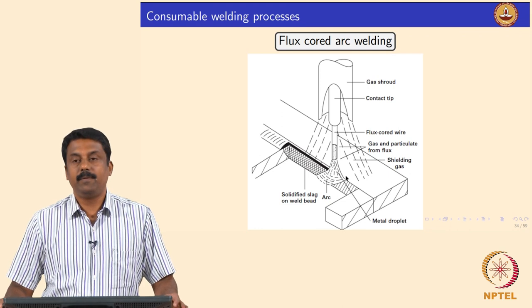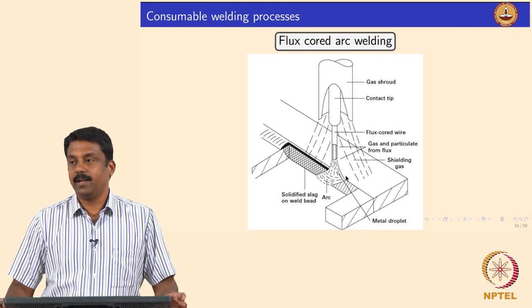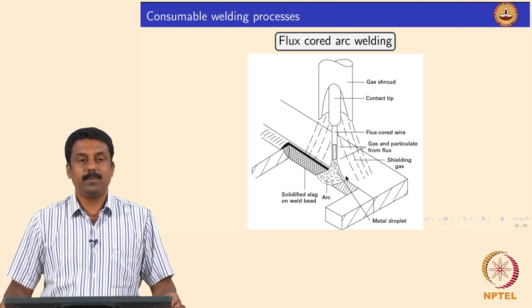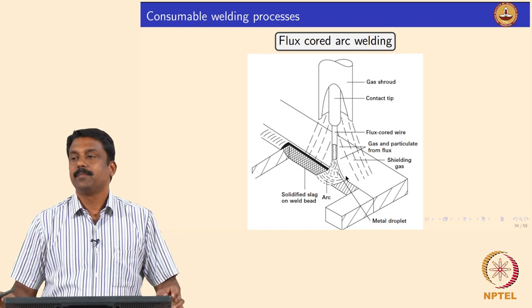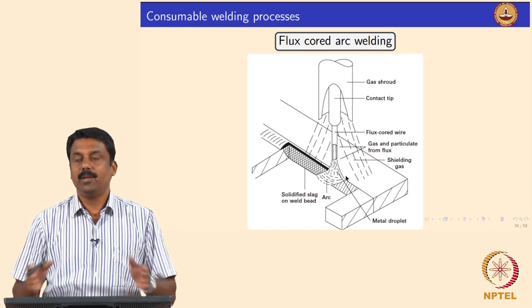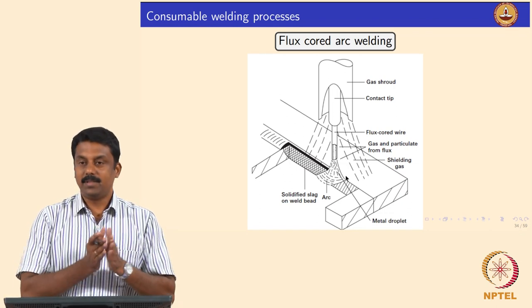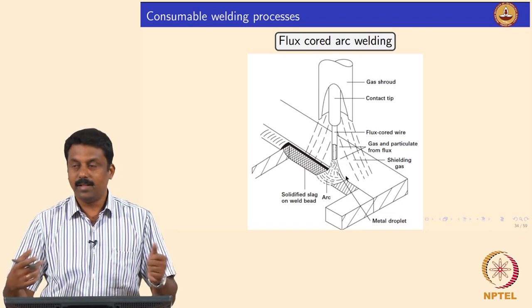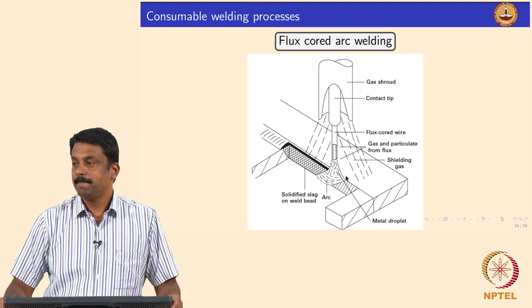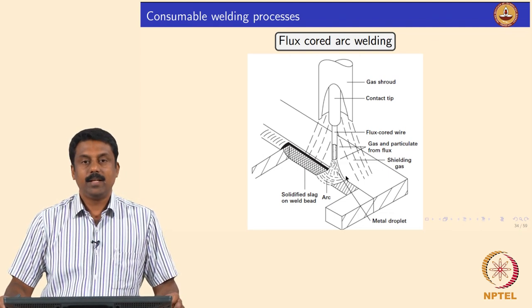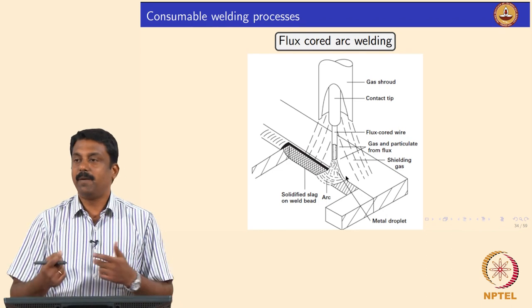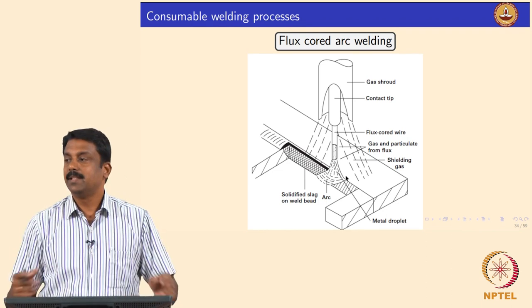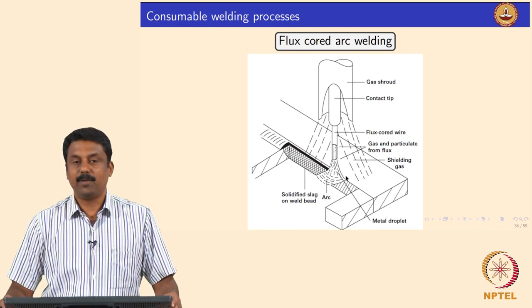The main disadvantage of using a stick electrode, MMAW electrode, is continuous feeding of the electrode. You have to use a stick and once the stick is consumed you need to replace it. By replacing the stick with another form of electrode we can make it a continuous process that can be automated.